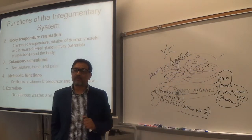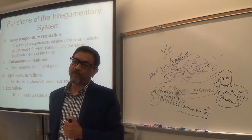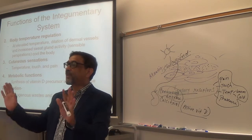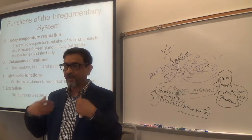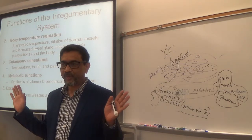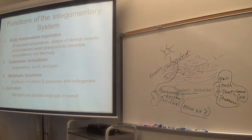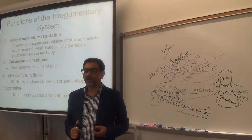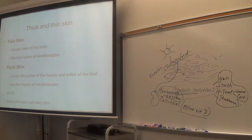Excretion is another function. Some metabolic waste gets out from the body through the skin via sweating. Most toxic chemicals get out through the urinary system as urine, but a small amount of metabolic waste — like nitrogenous wastes such as ammonia and urea — gets out with the sweat.